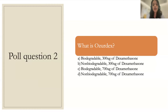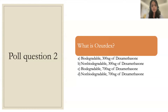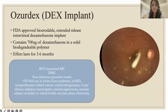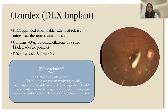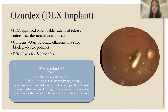Poll question: What is Ozurdex? The correct answer is that it is a biodegradable 700-microgram dexamethasone implant. It is FDA approved, bioerodible, and provides extended release in the vitreous cavity lasting up to three to six months. It is used for RVO-associated macular edema, diabetic macular edema, and non-infectious posterior uveitis. Off-label uses include Irvine-Gass syndrome, neovascular AMD, vasoproliferative retinal tumors, Coats disease, radiation maculopathy, and retinitis pigmentosa. On fundus photo, the implant appears as a whitish material in the vitreous.